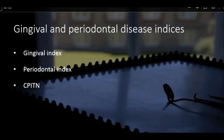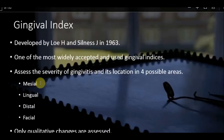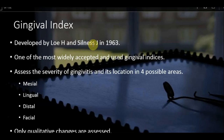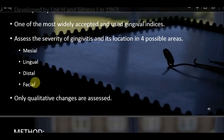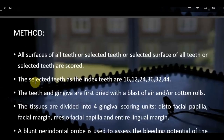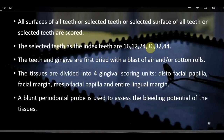The Gingival Index (GI) was developed by Löe and Silness in 1963. It assesses the severity of gingivitis at four possible areas per tooth: mesial, lingual, distal, and facial. Only qualitative changes are assessed. The method allows examination of all teeth or selected teeth; selected teeth can be: 16, 12, 24, 36, 32, and 44 — note the index teeth differ from OHI-S or PHP, including lateral incisors and second premolars.